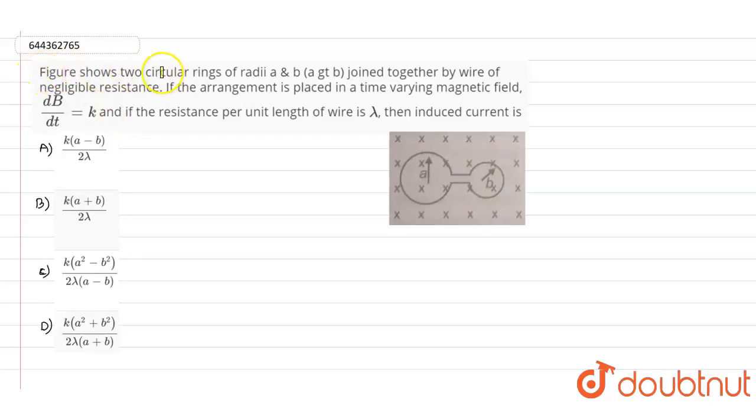question, it is given that the figure shows two circular rings of radius a and b joined together by a wire of negligible resistance. If the arrangement is placed in a time-varying magnetic field, that means dB/dt equals k, and if the resistance per unit length of the wire is represented by λ,